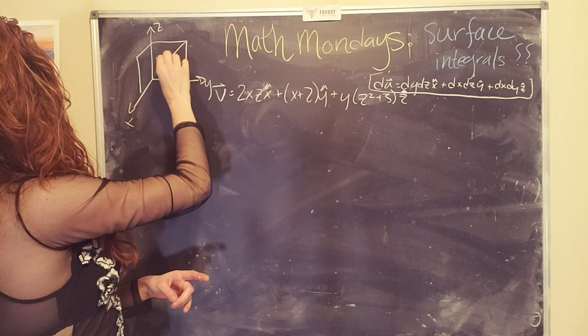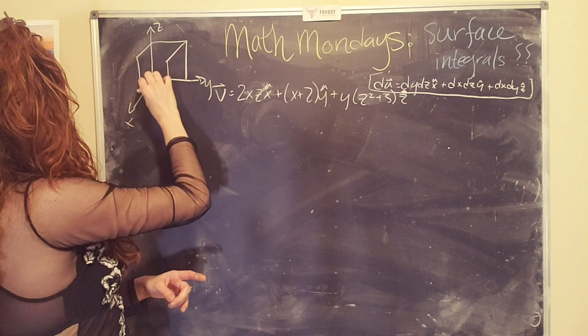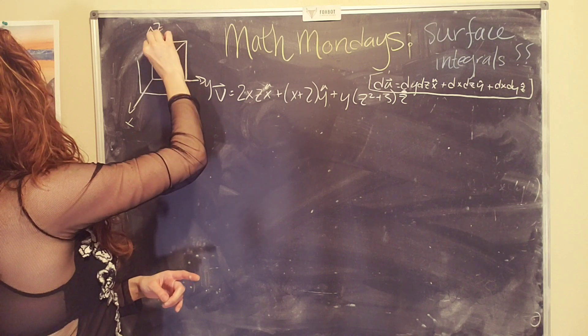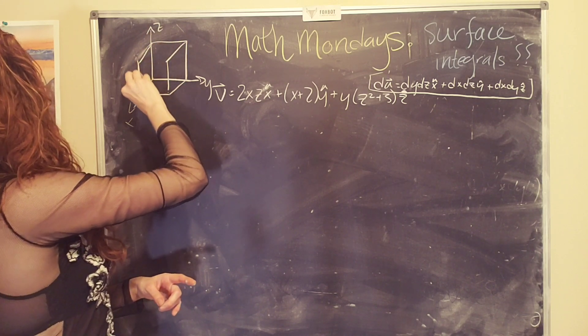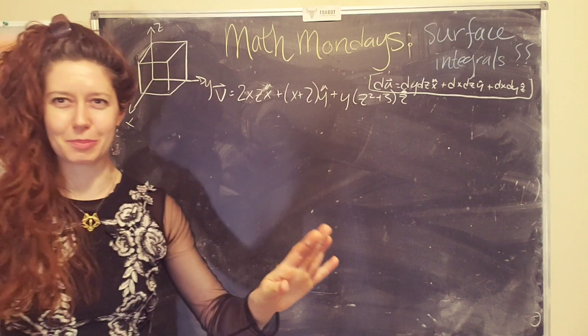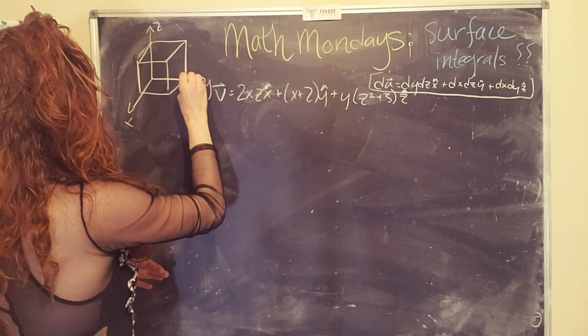So let's say we have a surface that is a cube. Oh my, why does my cube look funky? Okay. Well, whatever. That's fine. It's fine. Okay. There we go. That's a little bit of a better cube. Okay. It's a cube. It's a cube. Okay. So my cube is length two.